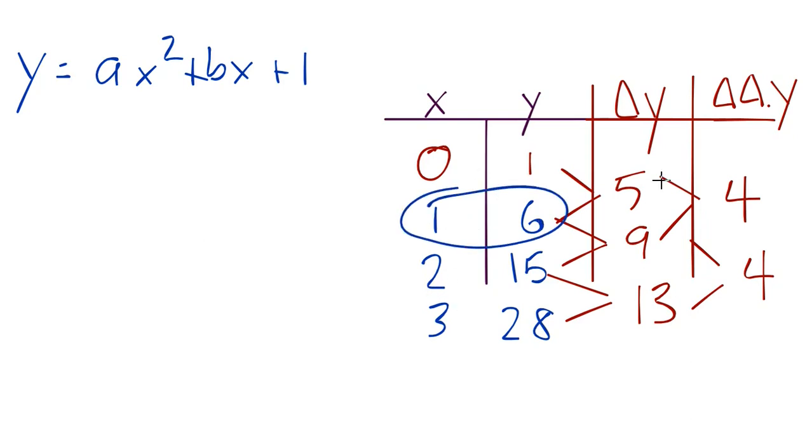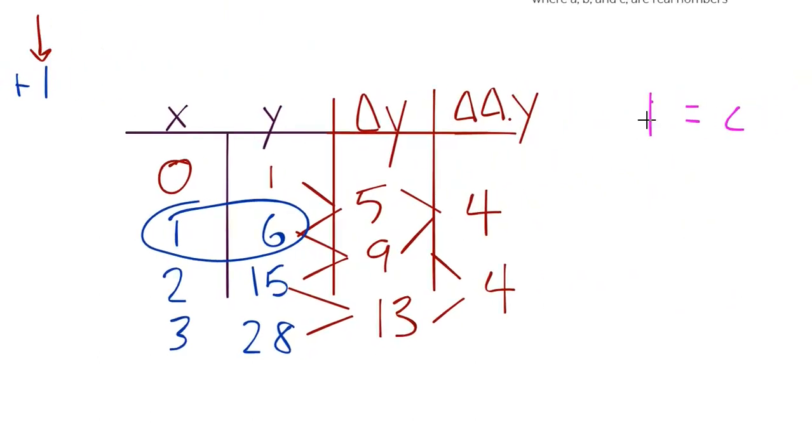So let's do, let's plug in 1, 6. We can't use this one because we've already used that and everything would cancel out. We couldn't find a and b. So we're going to use 1, 6, and we're just going to substitute into this equation. And again, where this 1 is that c that we just found right over here.